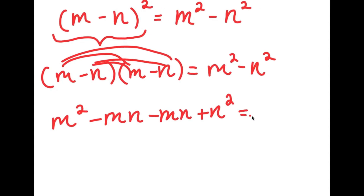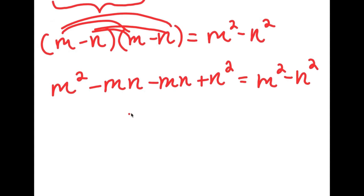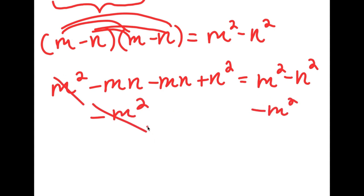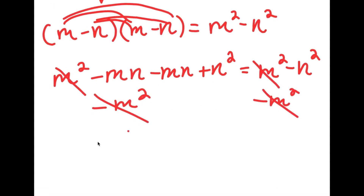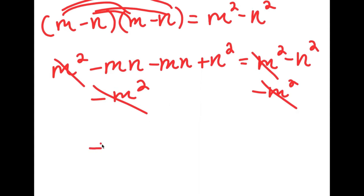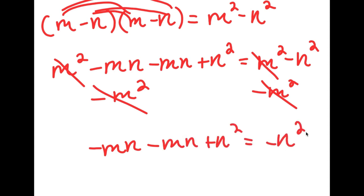So this is equal to m squared minus n squared. Now I can do a few things here. I'll start by subtracting m squared on both sides, so the two m squared terms cancel out, and I'm left with negative mn minus mn plus n squared is equal to negative n squared.